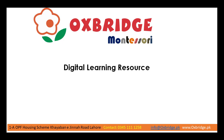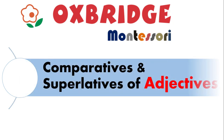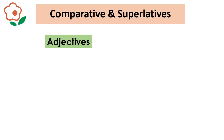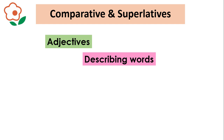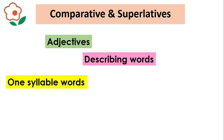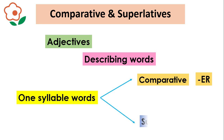Welcome to Oxbridge Montessori's Digital Learning Platform. To make the comparative degree of an adjective, we add only ER to any adjective. And to make the superlative degree of an adjective, we add EST for one-syllable words.